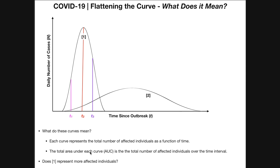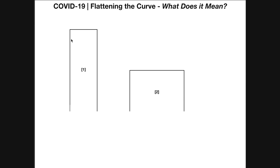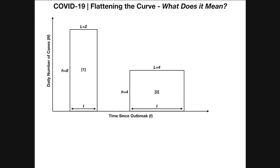Here's a question: what about the total area under each curve? What does that represent — the area under the curve bounded by the horizontal axis? It turns out the area under the curve represents the total number of affected individuals over that time interval. So the question is: does curve number one represent more affected individuals than curve number two? It would be practically impossible to tell from the irregular shape, so let's instead use regular rectangular shapes to compare — curves one and two as rectangles.